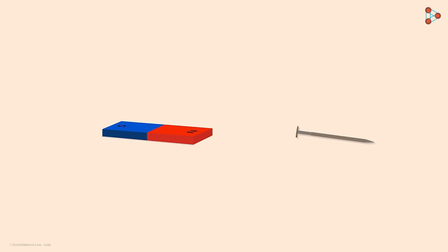We know that as we bring it closer to the nail, at some point the nail moves towards the magnet and sticks to it. Moreover, it remains there until we manually separate it from the magnet. So why does an iron nail stick to the magnet?